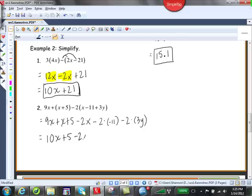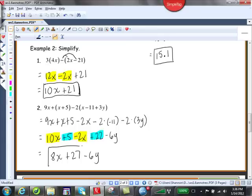We've got minus 2x. Minus and minus is going to be positive. So we're going to have plus 22 and then we'll have minus 6y. Now do you see we have like terms for the 10x and the negative 2x. So this will yield a result of 8x. The 5, positive 5 and positive 22 are like terms. So we'll have plus 27 and then minus 6y for our last term.